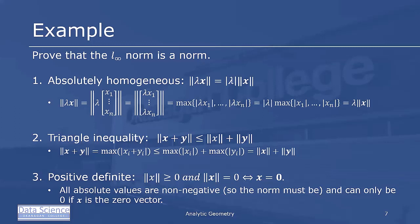Finally, positive definiteness: we want to prove that the norm of x is greater than or equal to zero, and equals zero if and only if x is the zero vector. The L-infinity norm takes the maximum of all absolute values, so it must always be greater than or equal to zero. It equals zero only if all components are zero, which means x is the zero vector. So it's positive definite.